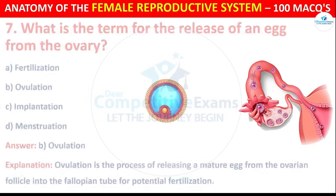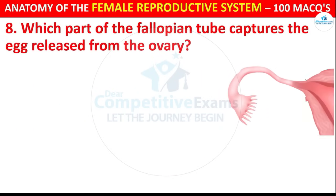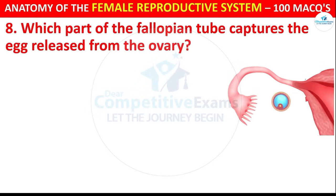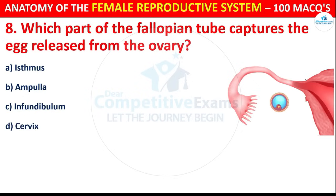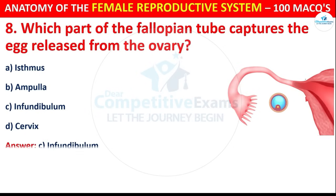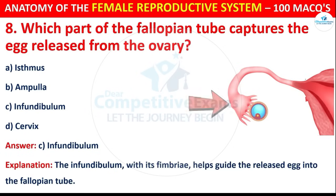Question number 8: Which part of the fallopian tube captures the egg released from the ovary? Options are: Isthmus, Ampulla, Infundibulum, or Cervix. The correct answer is C, i.e. Infundibulum. The infundibulum, with its fimbriae, helps to guide the released egg into the fallopian tube.